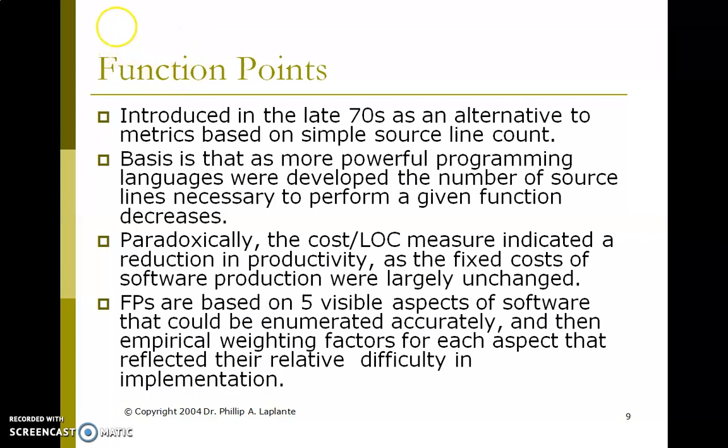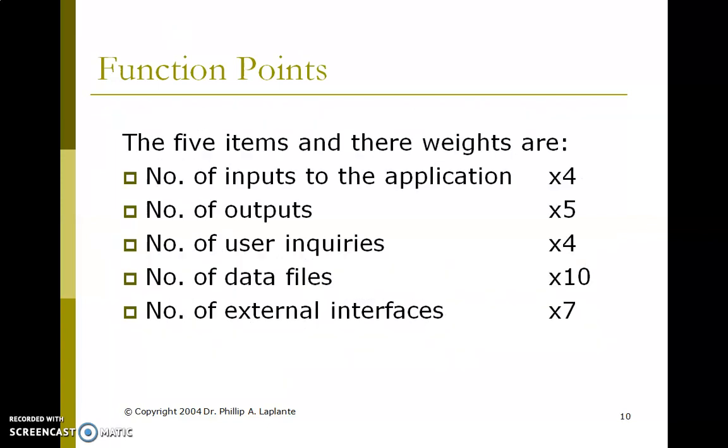Function points are based on five visible aspects of software that are enumerated accordingly, then empirically weighted for each aspect that reflects their relative difficulty in implementation. The five items and their weights are: number of inputs to the application, weight 4; number of outputs, weight 5; user inquiries, weight 4; number of data files, weight 10; number of external interfaces, weight 7.